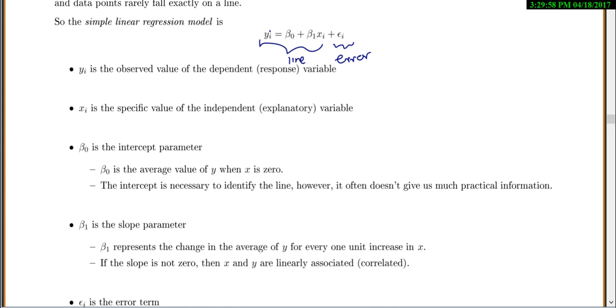Beta 1 is the slope parameter. So beta 1 represents the change in the average of y for every one unit increase in x. Basically, that's just saying slope equals rise over run. Or you can think of it as the change in y over the change in x. That's all that it's saying.